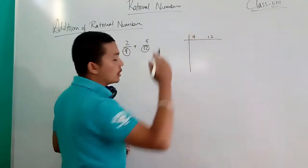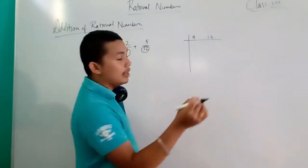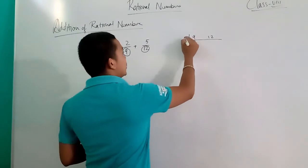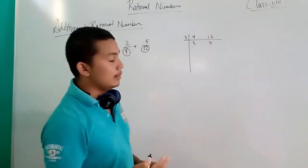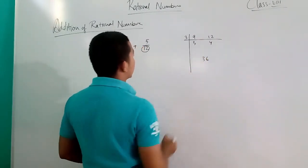9 and 12 have common factor 3. 3, 3, 4, the common factor. That means the LCM will be 3×3×4, which is 36.